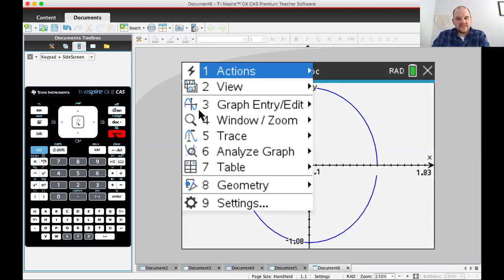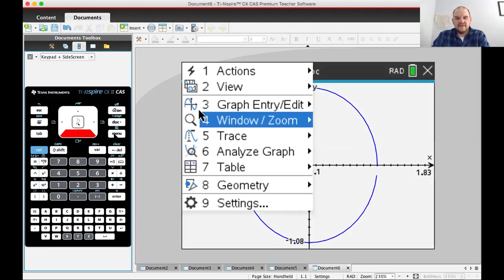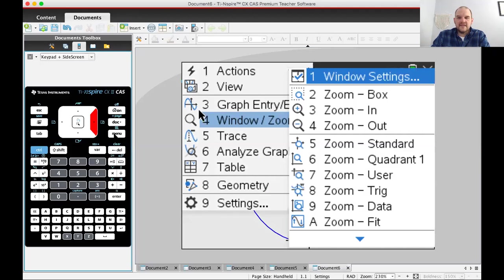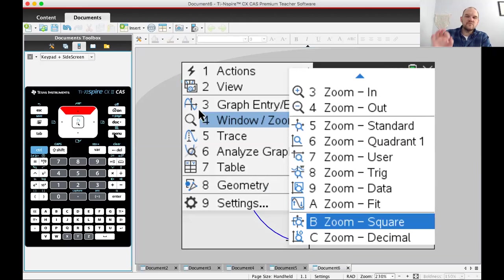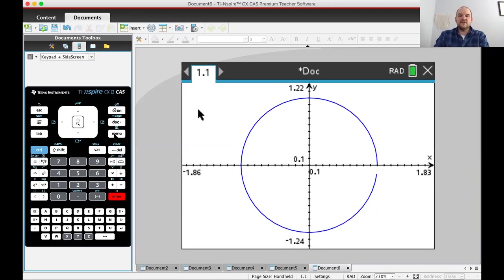What you can do to fix that is in the zoom menu, probably zoom standard is the easiest way to fix it. If you use zoom square, the easiest way to explain what zoom square does is it makes a circle look like a circle. It makes it so the x and y axes are using the same increment. There you go, it makes it nice and the right shape.